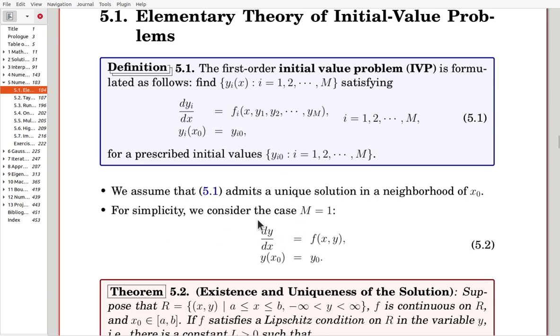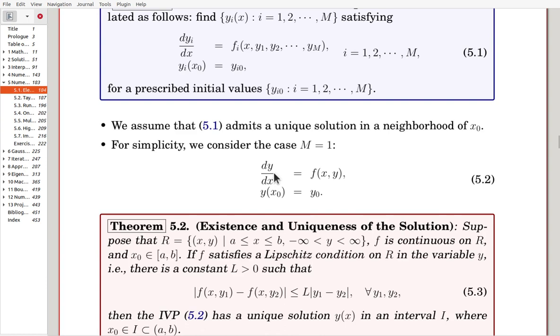Once m is 1, then we can write in this way: dy over dx equals f of x,y, and for y at x0, the initial value is y0.